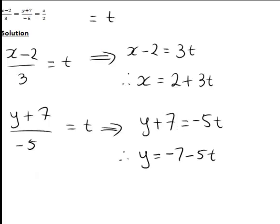And finally, z divided by 2—setting that equal to t, that one rearranges quite readily to give z equal to 2t, or 0 plus 2t.